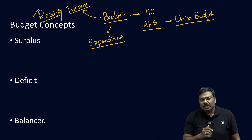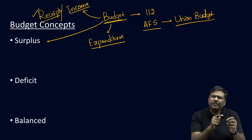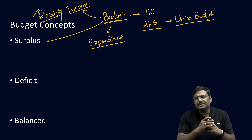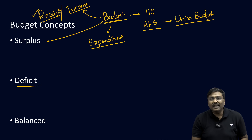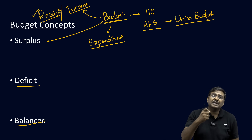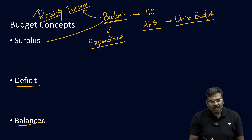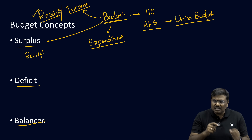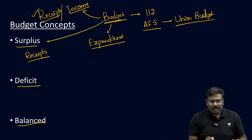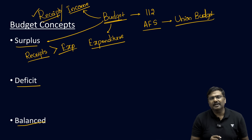The next important point: budgets can be of different types. There can be a surplus budget, a deficit budget, and a balanced budget. A surplus budget means the amount of receipts collected by the government in that financial year is greater than the amount of expenditure incurred. For example, if government spends 100 crore rupees but earns 120 or 150 crore, that is called a surplus budget.